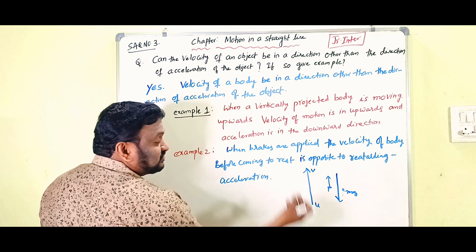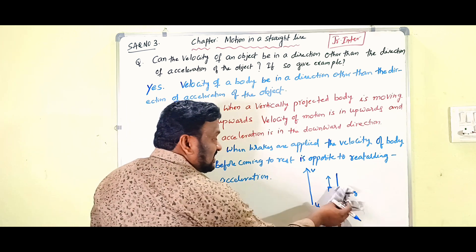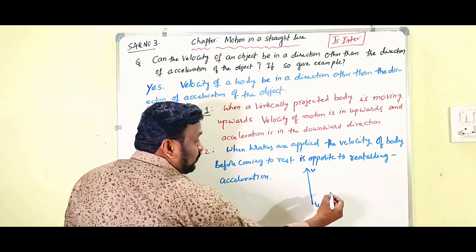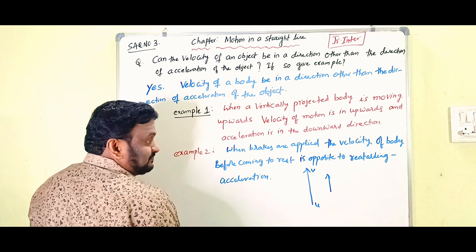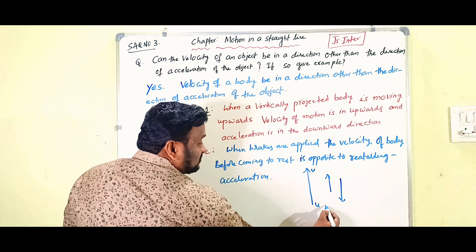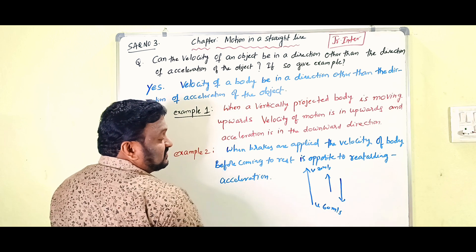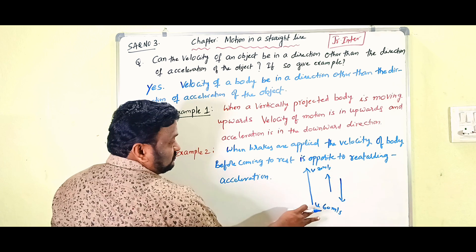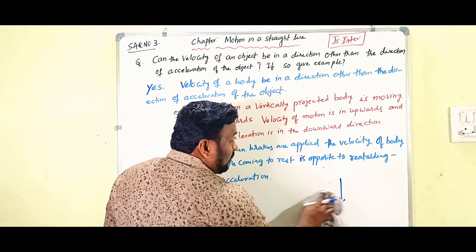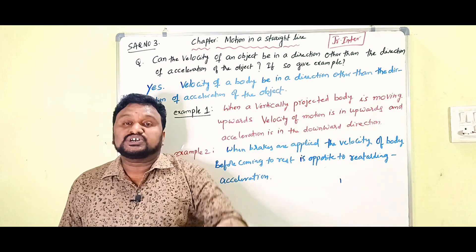When the gravitational force is more than the applied force, the body comes down. When the applied force is more than the gravitational force, it goes up. So when there is a resultant force in the upward direction, the velocity is also in the upward direction. The gravitational force changes the net force value, and acceleration due to gravity is in the downward direction. So when the body is going up, velocity is upward and acceleration is downward.